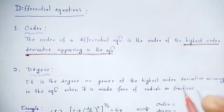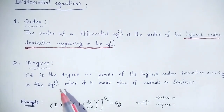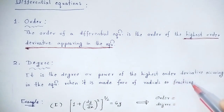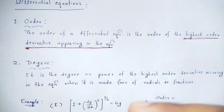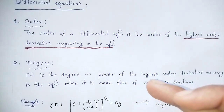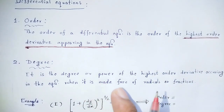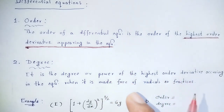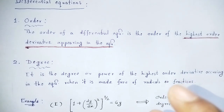Next, the degree of a differential equation. The degree is the power of the highest order derivative occurring in the equation, when it is made free of radicals and fractions. We find the highest order derivative, then look at its power — that gives the degree.